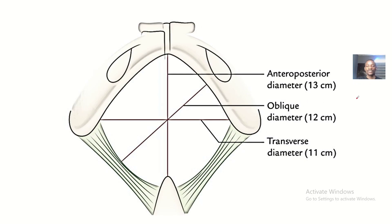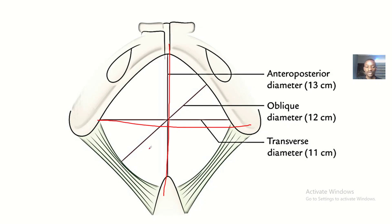The bony pelvis is measured anterior-posteriorly. It is measured in the center, that's from one brim to the other brim. And it's measured obliquely — that's from the iliopubic eminence to the sacroiliac joint on the opposite side.